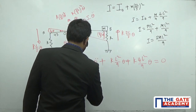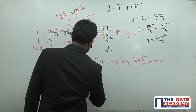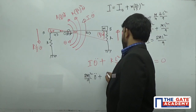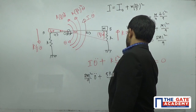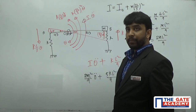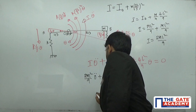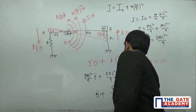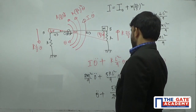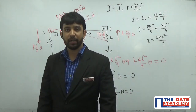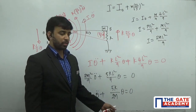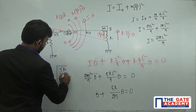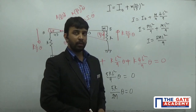Substituting into the equation: (2ML²/9)·θ̈ + (5KL²/9)·θ = 0. Dividing through gives θ̈ + (5K/2M)·θ = 0. Comparing with the standard SHM equation θ̈ + ωn²·θ = 0, the natural frequency of this system is ωn = √(5K/2M) radians per second.